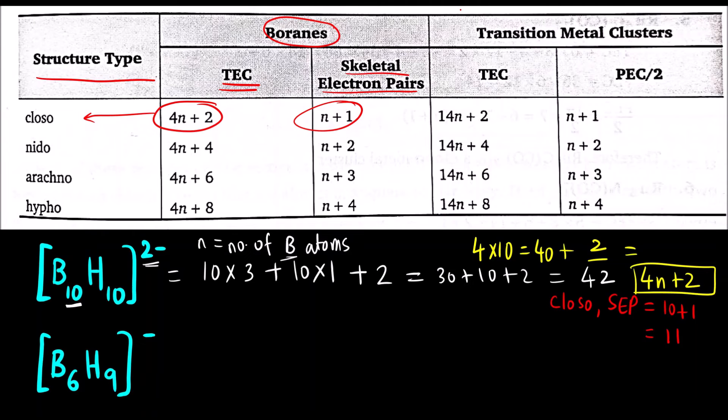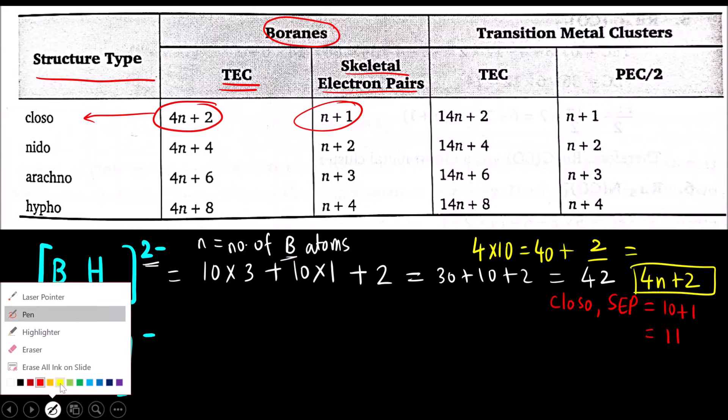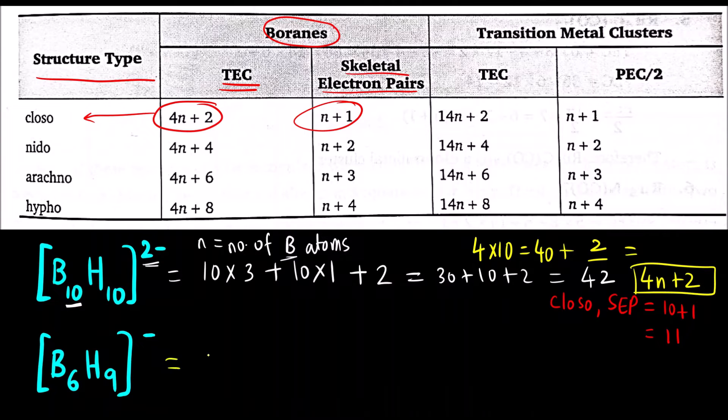We have to calculate for the second boron cluster as well. Here again boron is 3 into 6 plus 9, 9 into 1 plus 1 negative charge, so we will add 1. Total 18 plus 9 plus 1 that will be 28. Now again here N is 6. We will compare. 4 into 6 is 24. 24 plus what will give me 28? 24 plus 4 will give me 28. So this is 4N plus 4 type.